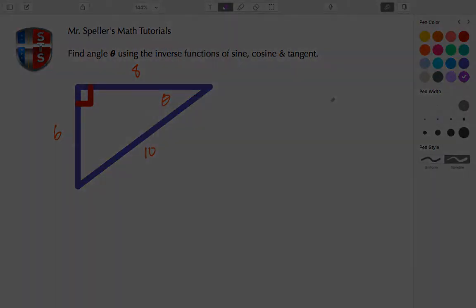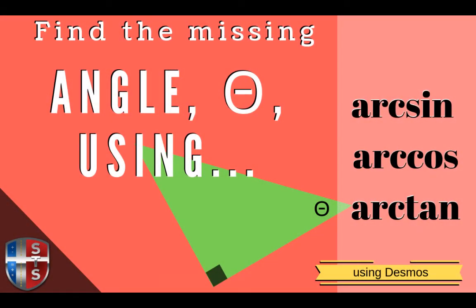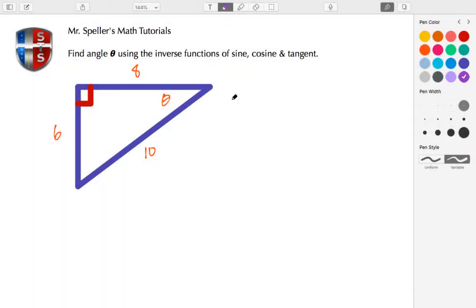Alright, let's get started. We're going to begin by using the function sine. To find the sine of theta, that's going to be the opposite side over the hypotenuse. So let's write this here: sine theta is equal to 6 over 10.